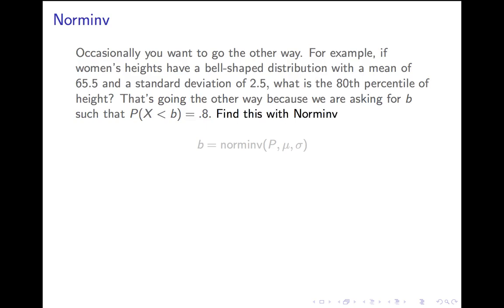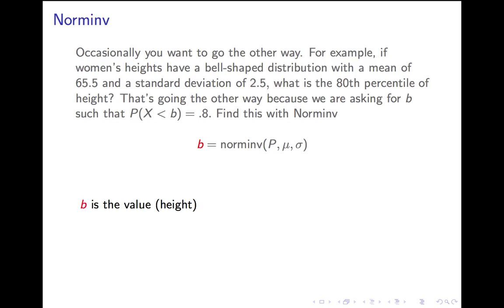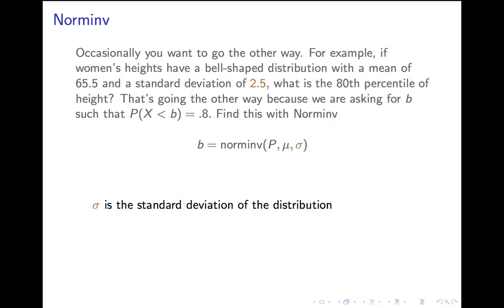So, it's called norminv, the inverse of normdist. And you compute it like this. b, that 80th percentile, equals norminv p, μ, σ. Three parameters here, not four. Where b is the value you're looking for, p is the percentile, μ is the mean, σ is the standard deviation.